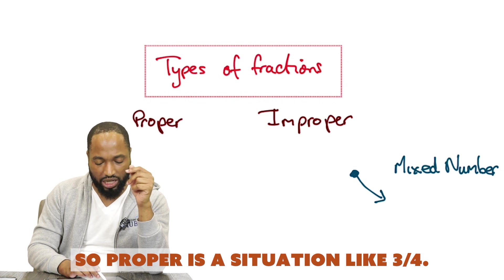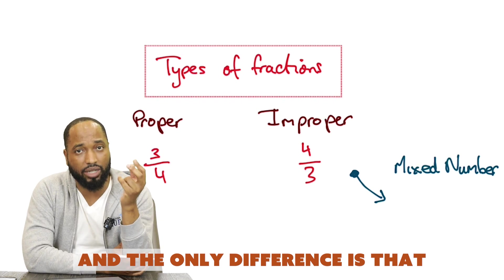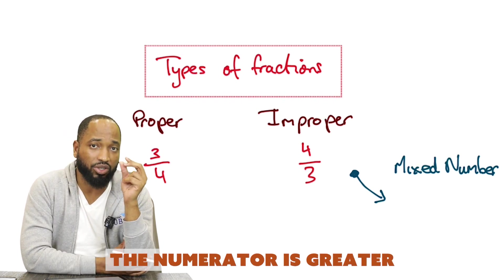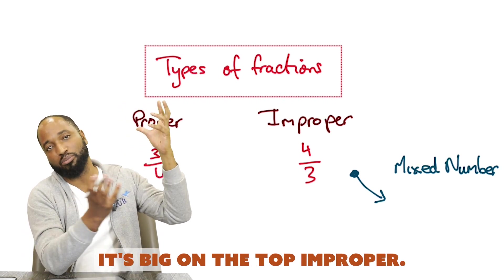So proper is a situation like 3/4. Improper would be a situation like 4/3. And the only difference is that in an improper fraction, the numerator is greater than the denominator. It's top heavy, big on the top. Improper.